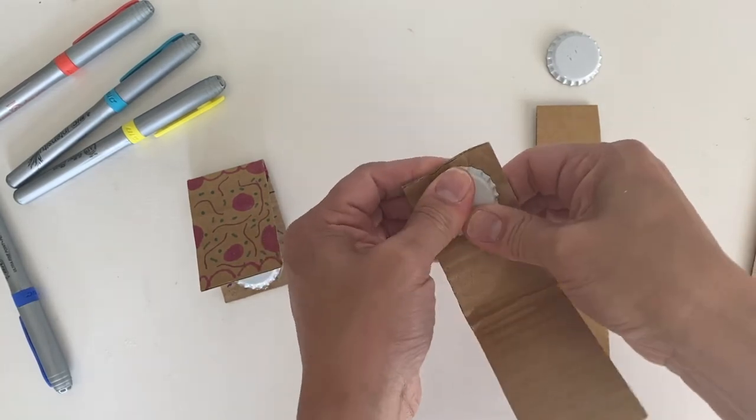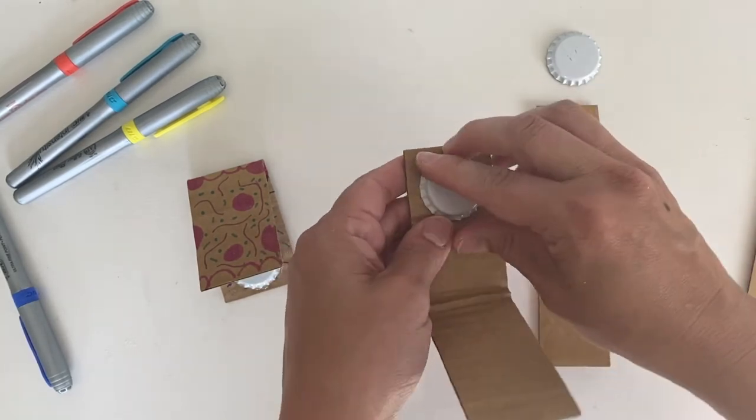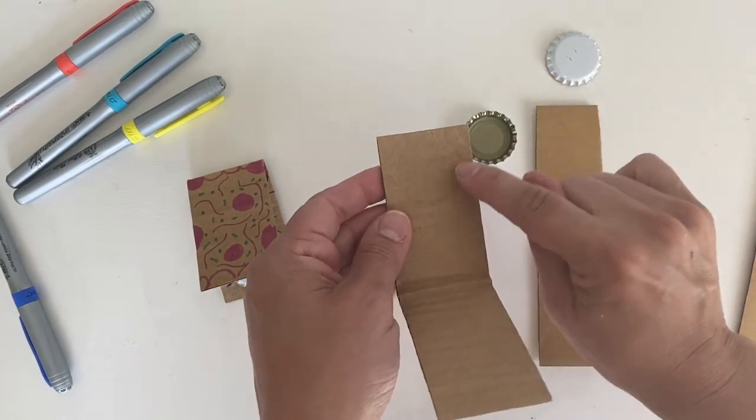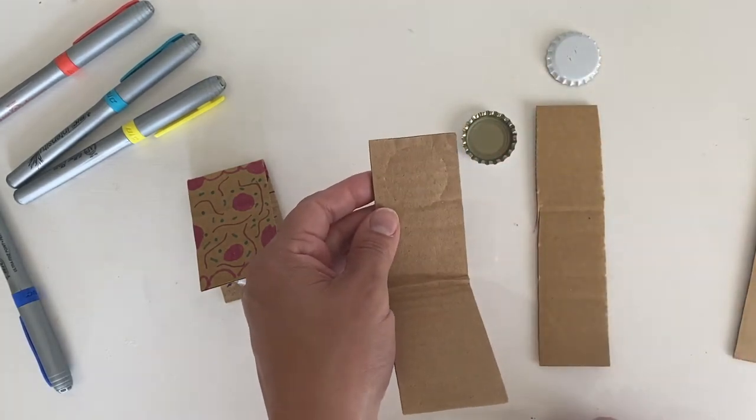Press down with your bottle cap on the end so you make a little indentation and you can see where exactly you need to put your hot glue.